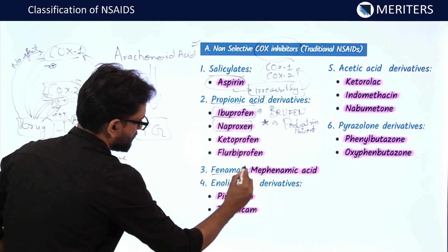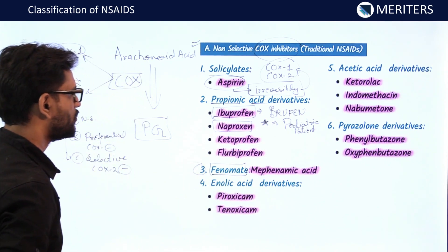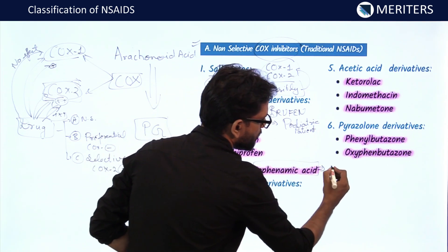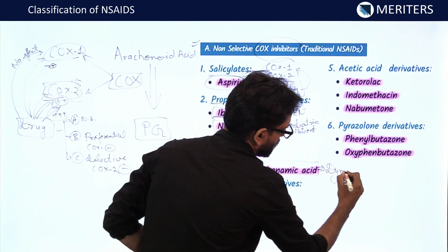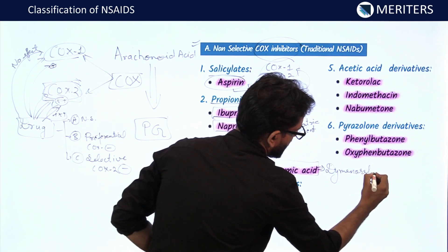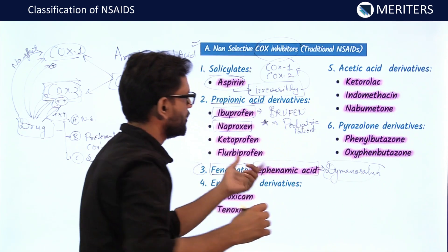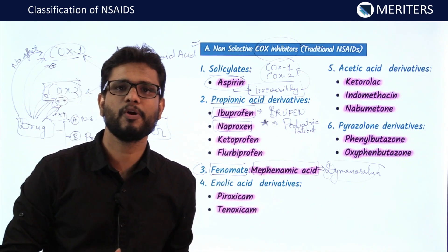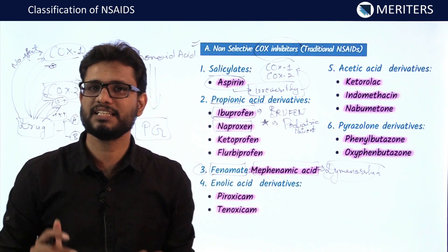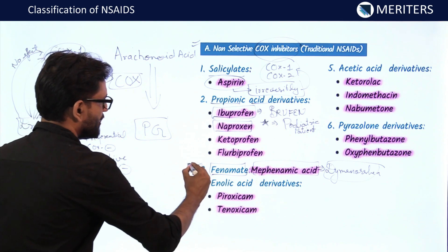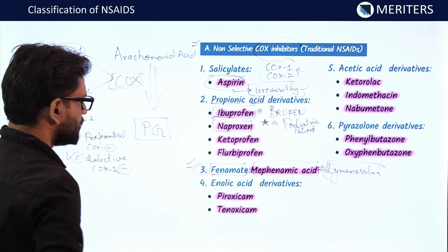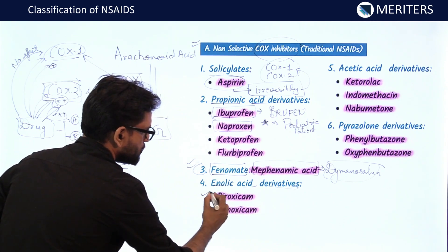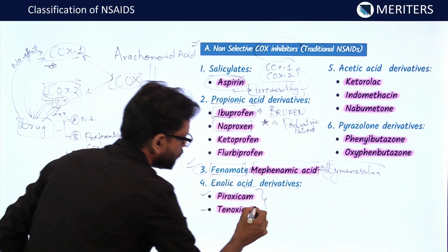The third category is the fenamates — mefenamic acid, which is most commonly used for dysmenorrhea. It is very effective, with almost equal efficacy to opioids, but without physical dependence, making it useful for women with menstrual pain. Then come the enolic acid derivatives: piroxicam and tenoxicam. These two drugs are long-acting NSAIDs.